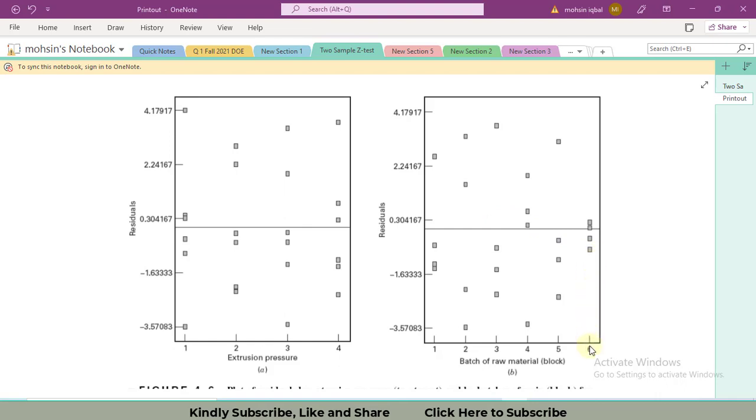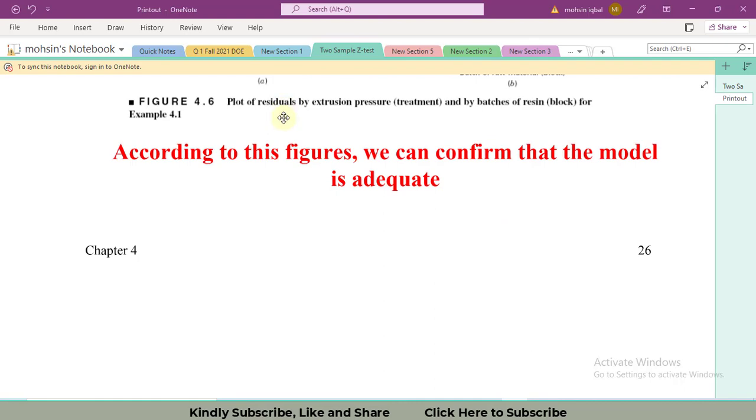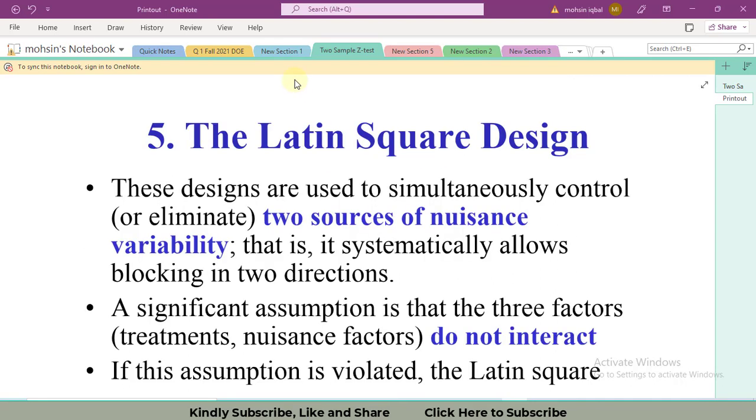You can see clearly at level six that all observations are very close to each other. If we compare these observations with level three, there is a huge difference in variation between the two levels. Our comment is that, based upon this graph, it is confirmed that the model is adequate and fit for analysis.